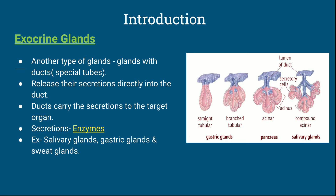Exocrine glands have special tubes known as ducts, and they release secretions known as enzymes. These ducts carry the enzymes to their target organs. Examples of exocrine glands are salivary glands, gastric glands, and sweat glands. The pancreas has two different functions — it behaves as both an exocrine and an endocrine gland, which will be discussed later in this chapter.